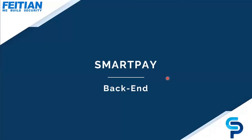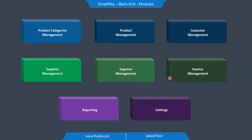Now let's talk about the SmartPay backend system. The backend includes modules like product category management, products management, customer management, supplier management, expenses and invoice management, reporting, and settings.